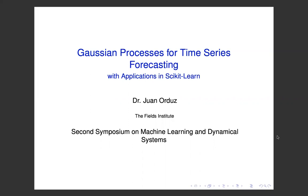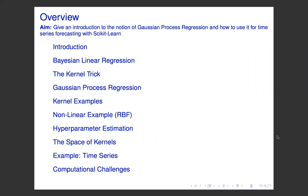Good morning. My name is Juan Orduz and I'm really happy to join the Second Symposium of Machine Learning and Dynamical Systems. The title of my talk is Gaussian Processes for Time Series Analysis with Applications in Scikit-Learn. The aim of this talk is to give an overall introduction and survey on how Gaussian processes can be used for time series forecasting. At the end I will focus on how you can do this with Scikit-Learn, but at the very beginning I will do an introduction on the theory behind Gaussian processes.